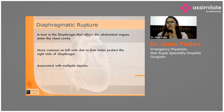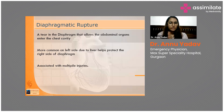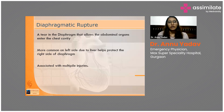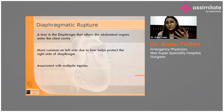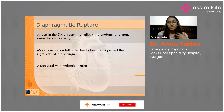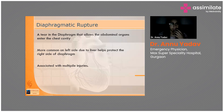Diaphragmatic rupture is very rarely an isolated injury; it is almost always an associated injury with other trauma to the abdomen or chest. A diaphragmatic rupture is a tear in the diaphragm that allows abdominal organs to enter the chest cavity. It is most common on the left side because on the right side the liver acts as a solid organ that protects the diaphragm. It is associated with multiple injuries, as seen in our patient who had chest trauma and associated pneumothorax.